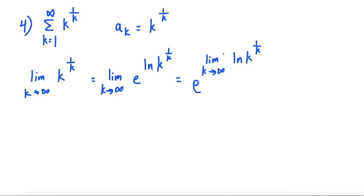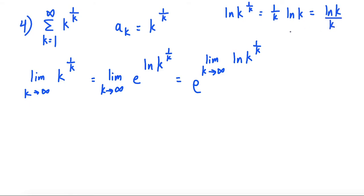Since e is a continuous function, natural log of k is continuous, and 1 over k is continuous as k goes to infinity, we can take e to the power and throw the limit inside: e to the limit as k goes to infinity of natural log of k to the 1 over k. Using the properties of logs, natural log of k to the 1 over k equals 1 over k times natural log of k, which equals natural log of k over k. So we have e to the limit as k goes to infinity of natural log of k over k — but this is infinity over infinity, which is indeterminate, so we use L'Hôpital's rule.